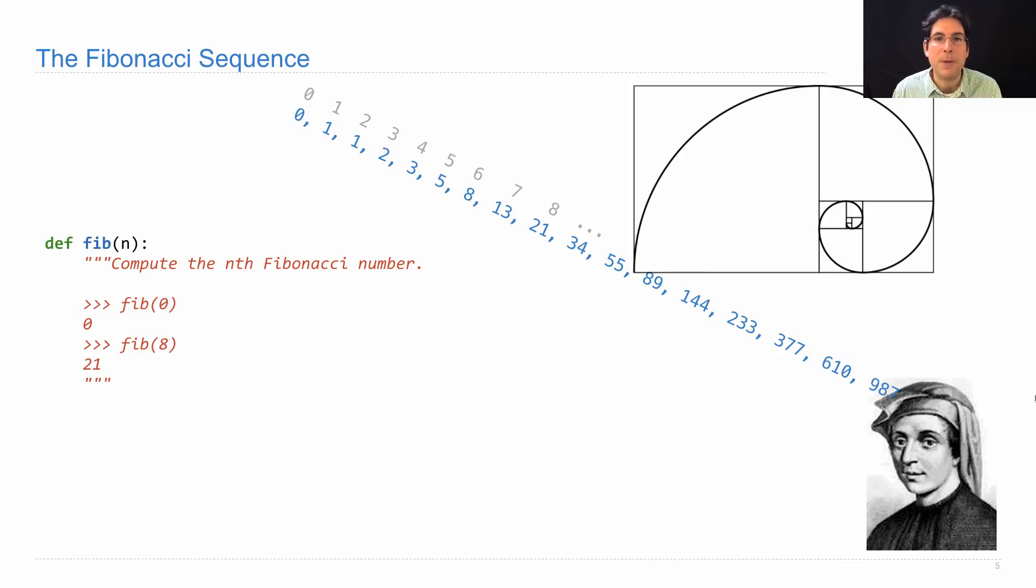The way we'll compute them using a while statement is to notice that I can compute this one just by writing down the number 0, and then I'll just add the difference between this and this, then the difference between this and this. If I add all those differences together, then I'll arrive at a Fibonacci number.